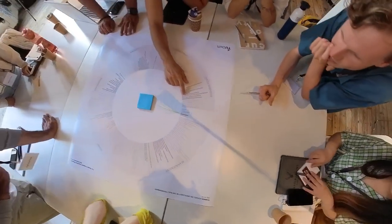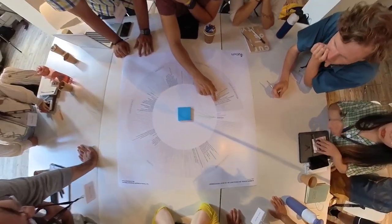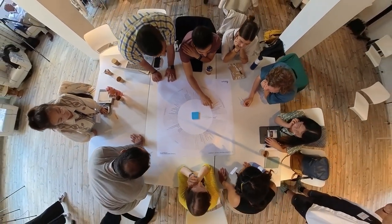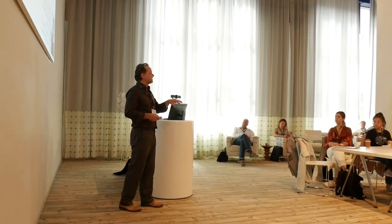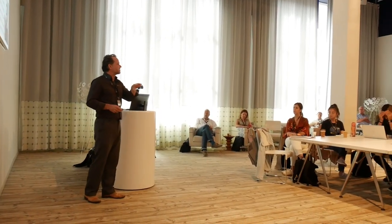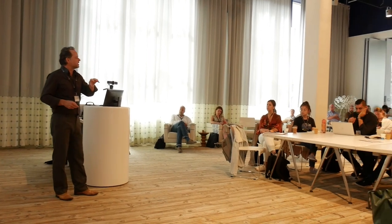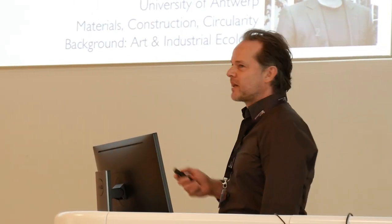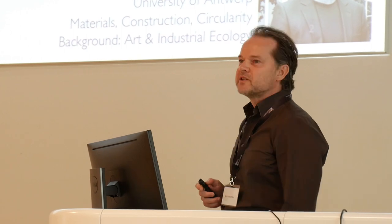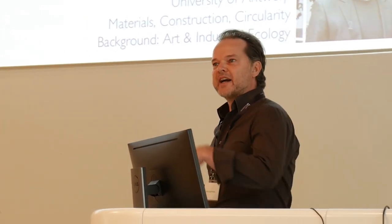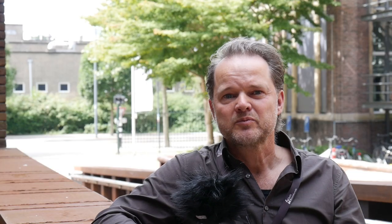There are four rules of thumb that I always apply to my context: the origin of materials, the composition of the materials, the operation of the materials — how they are used — and then the future of the materials, where do they go to. These four factors basically could make or break the circularity potential.